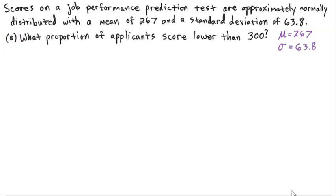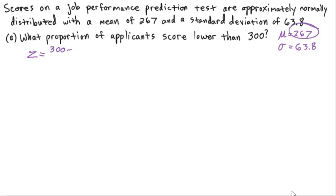Our first question, Part A, says: what proportion of applicants score lower than 300? To answer this, we need to identify a Z-score, and then go into the NumWorks calculator to find our proportions. The first thing we do is convert 300 into a Z-score. Z equals 300 minus the mean, which is 267, divided by 63.8.